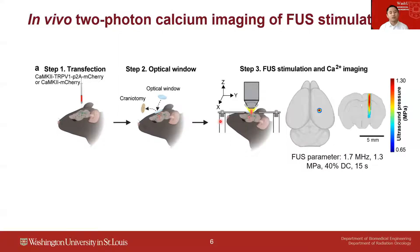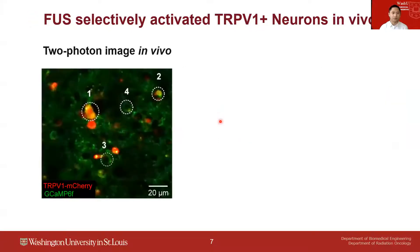The size of the ultrasound focus was 0.6 mm in the transverse view and 5 mm in the axial view. This is a representative two-photon image of the mouse brain: the red color represents TRPV1 and the green color represents the calcium indicator.